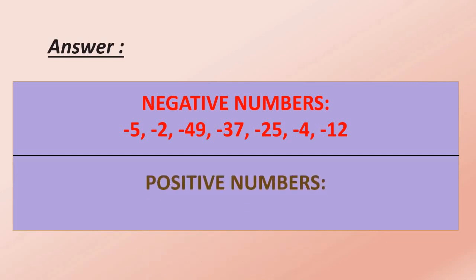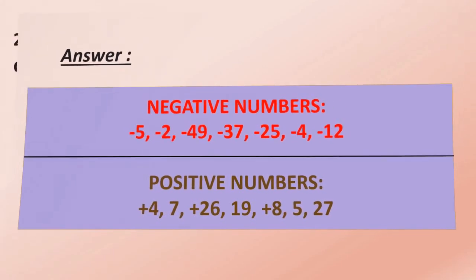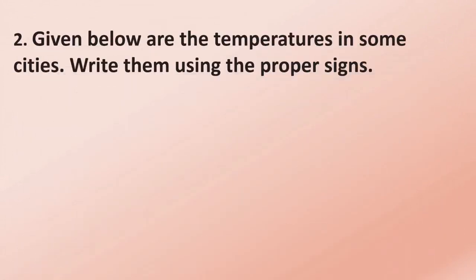Positive numbers are: plus 4, plus 7, plus 26, plus 8, plus 5. These are all positive numbers. Question number 2: Given below are the temperatures in some cities; write them using the proper sign.